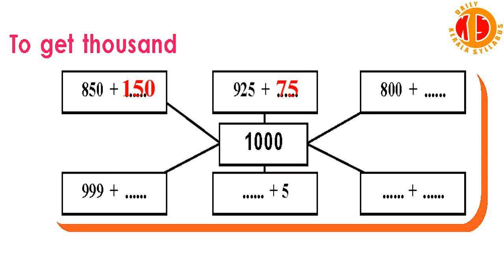925 plus dash. That is 925. How many times are you? 1,000. 25 plus 25 is 50, 50 plus 25 is 75, 925 plus 75 equals 1,000.